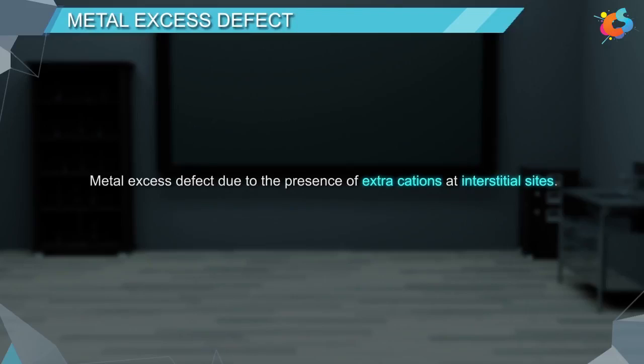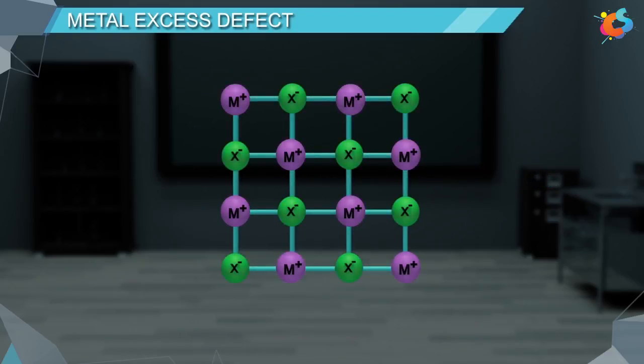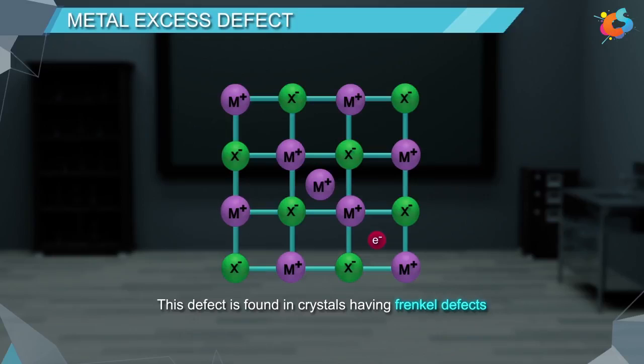Metal excess defect due to the presence of extra cations at interstitial sites. In this type of defect, metal excess is caused by an extra cation occupying the interstitial site. To maintain electrical neutrality, an extra electron is also present in some other interstitial site. This defect is found in crystals having Frenkel defects.